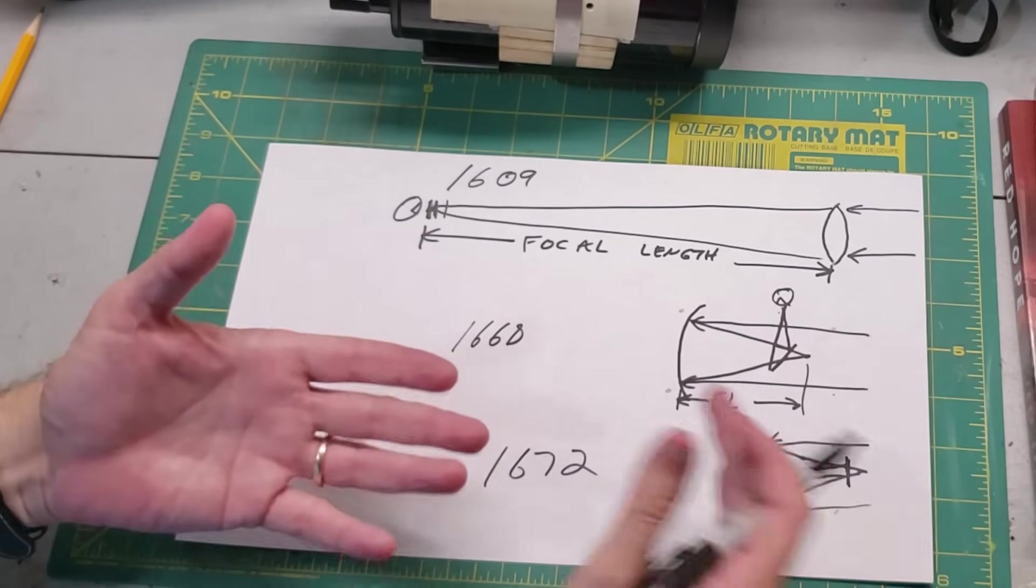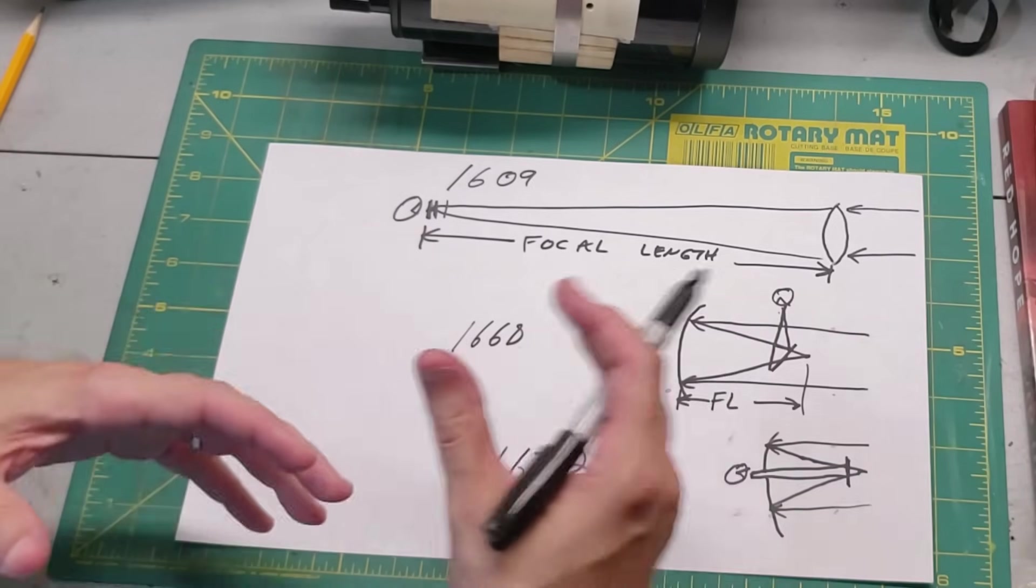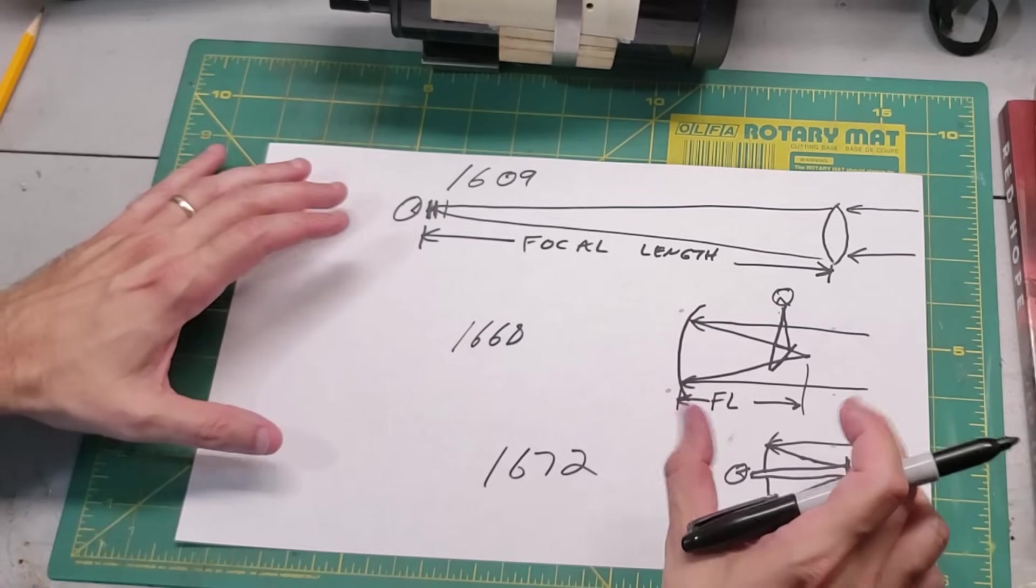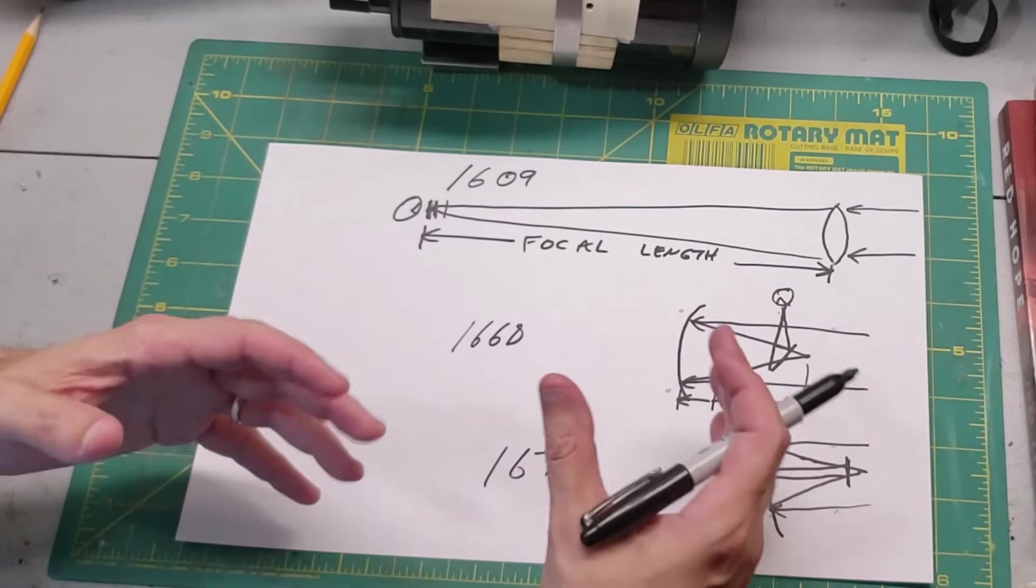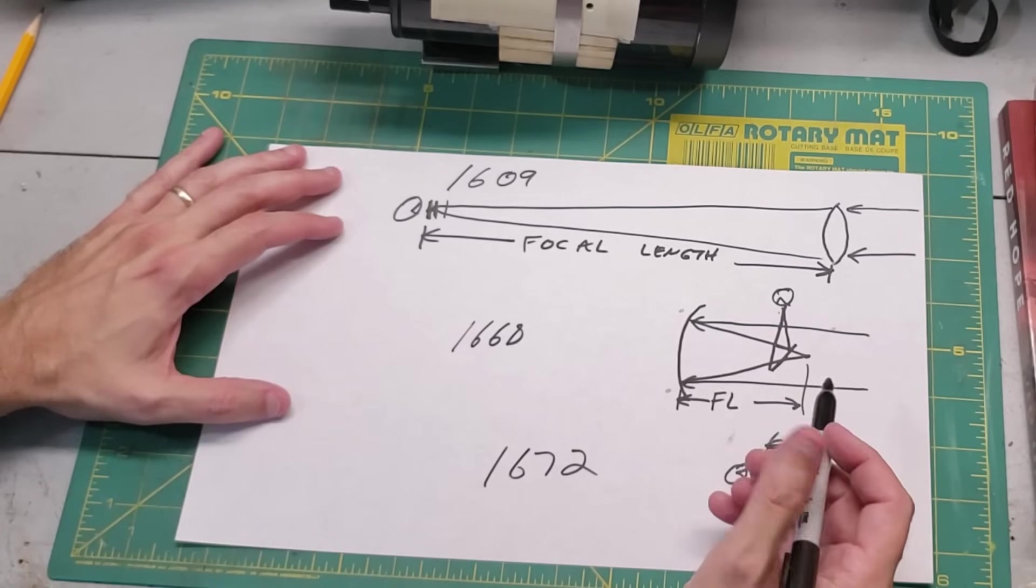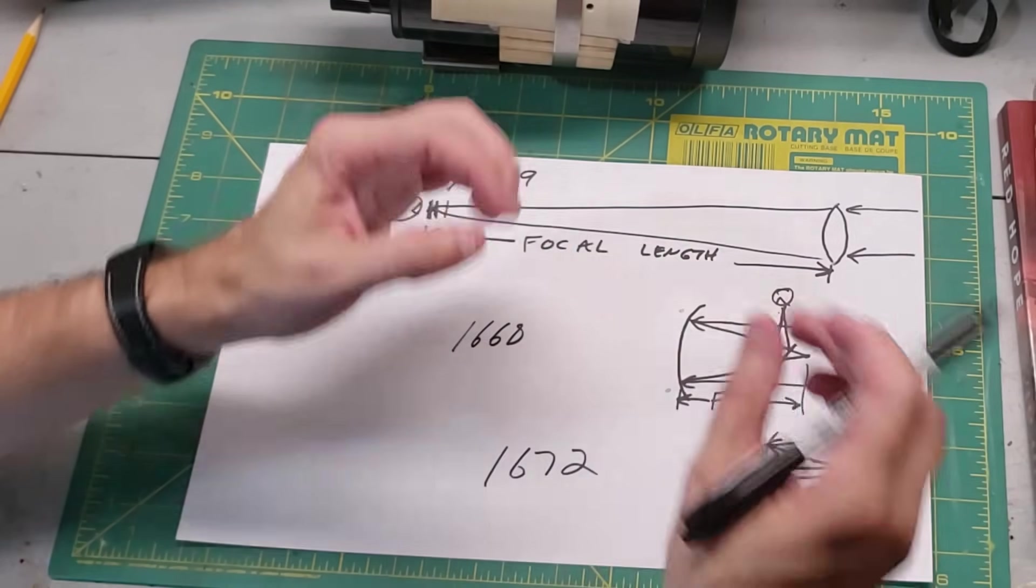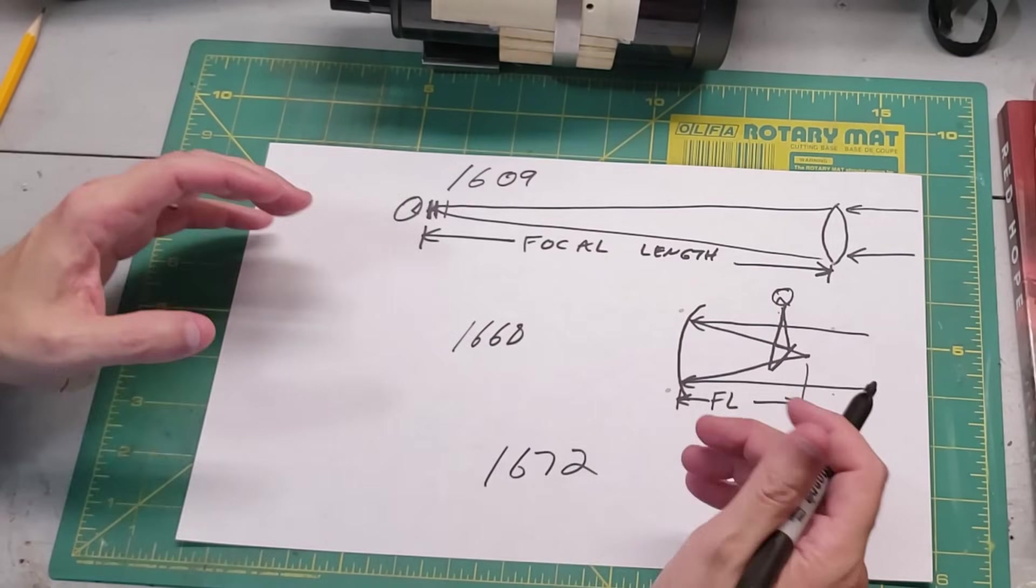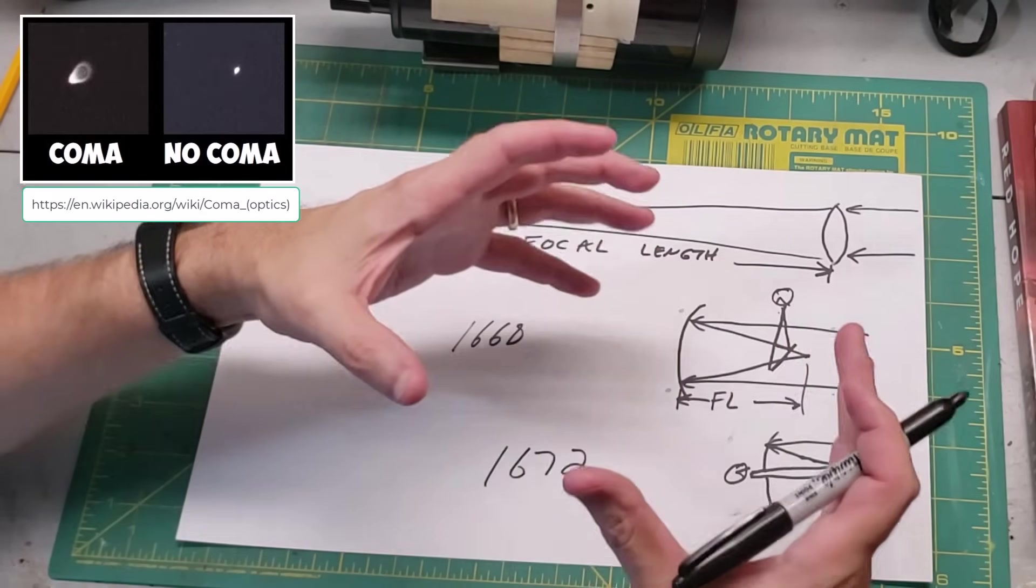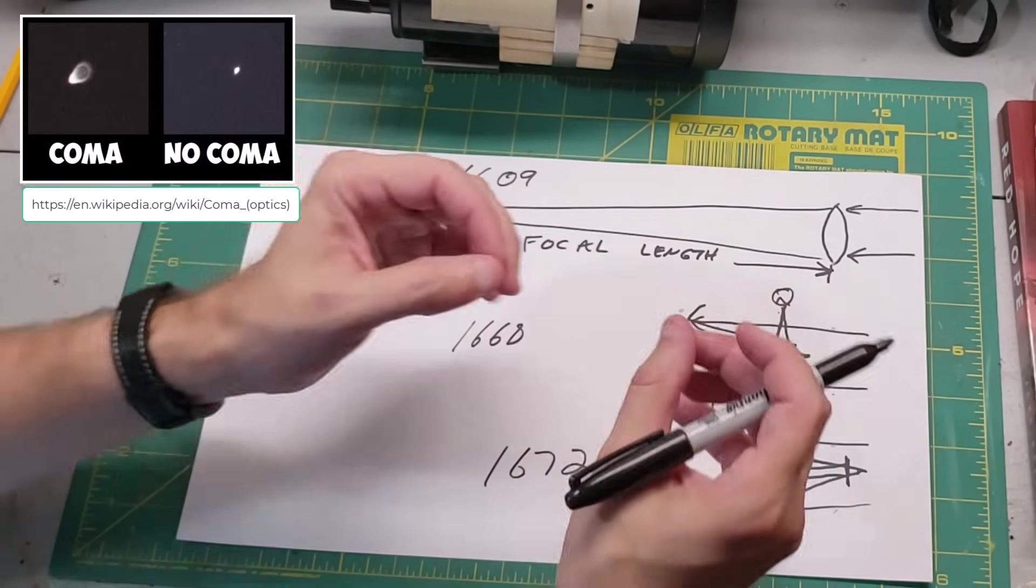Unfortunately, the Cassegrain style has an Achilles heel, and that is basically the shorter and shorter they get, they run into other problems such as off-axis issues. One of those is coma, that's where basically the image gets blurry towards the outside edges. Often you'll see stars that are stretched and they look a little bit like seagulls instead of points of light.